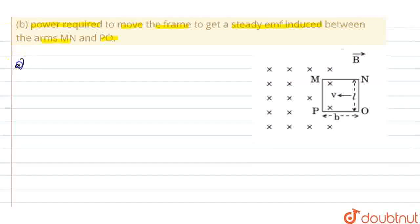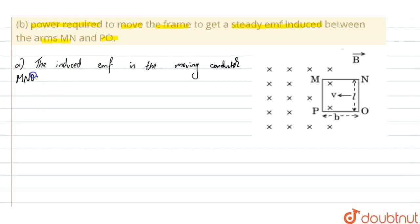For part A, the induced EMF in the moving conductor MNOP is given by the expression E equals BLV, where B is the magnetic field, L is the length of the conductor, and E is the induced EMF.